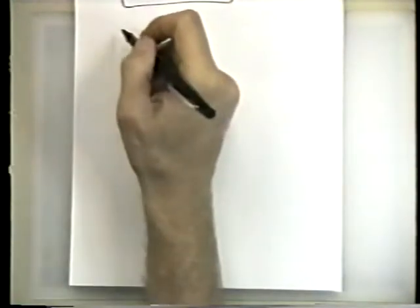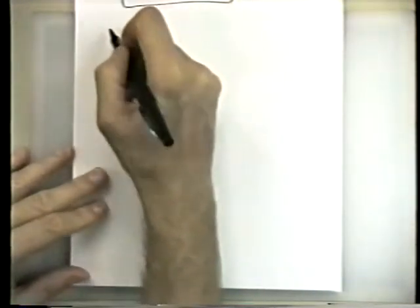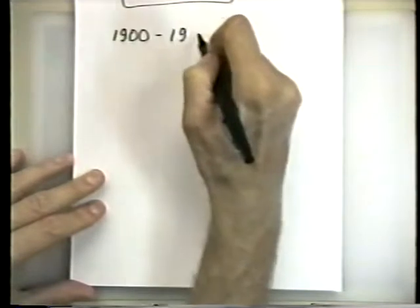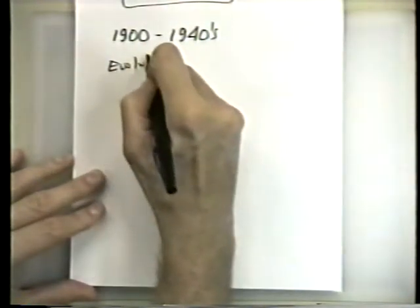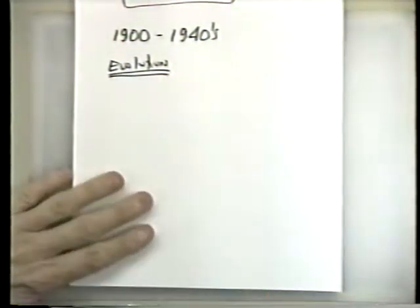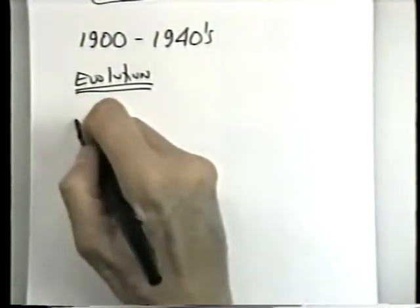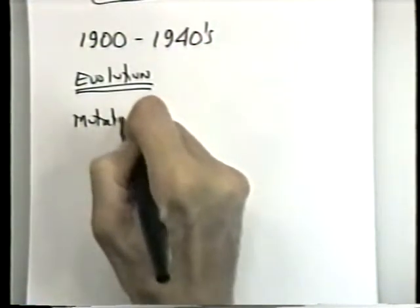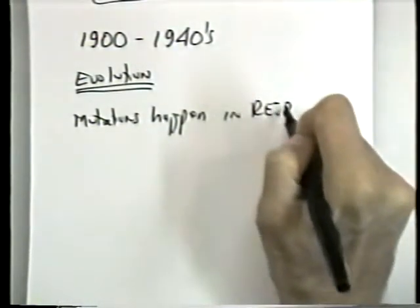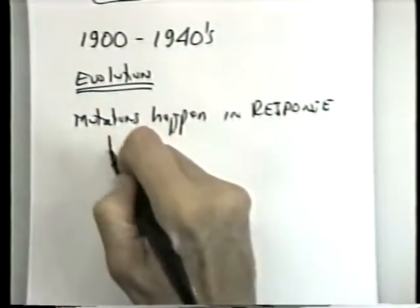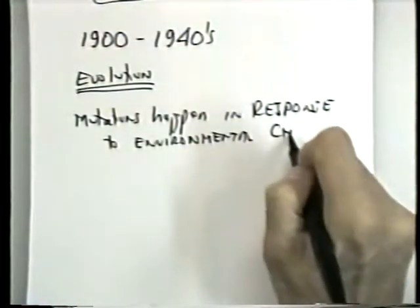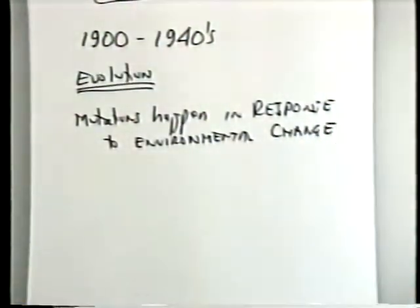So there was a longstanding debate which intensified roughly between 1900 and the early 1940s about how evolution worked. And there were two different thoughts on this. One was that mutations happen in response to environmental change.